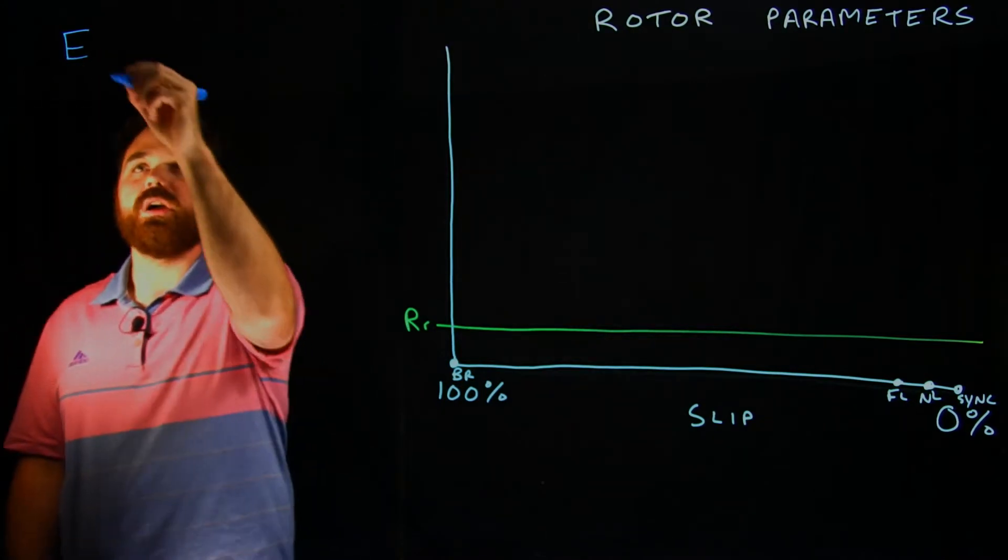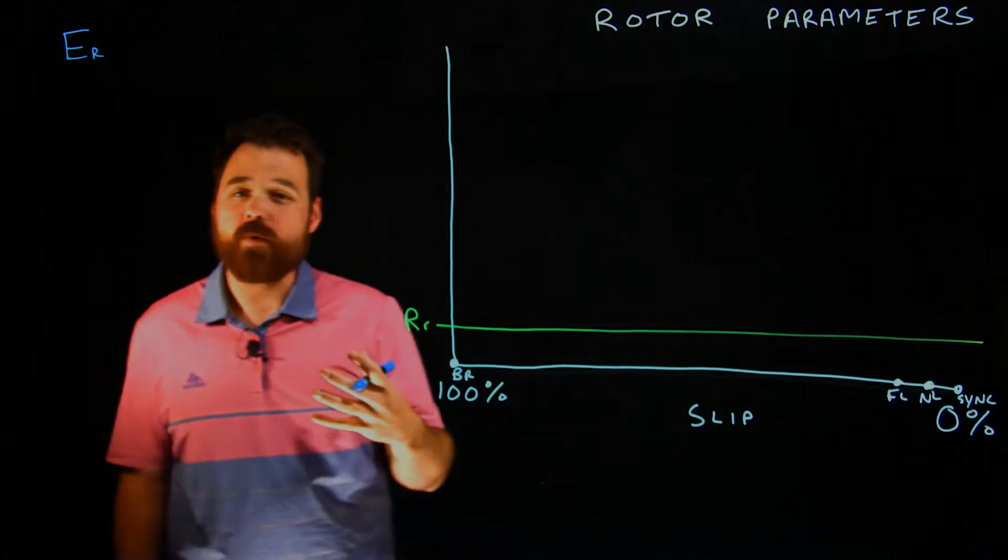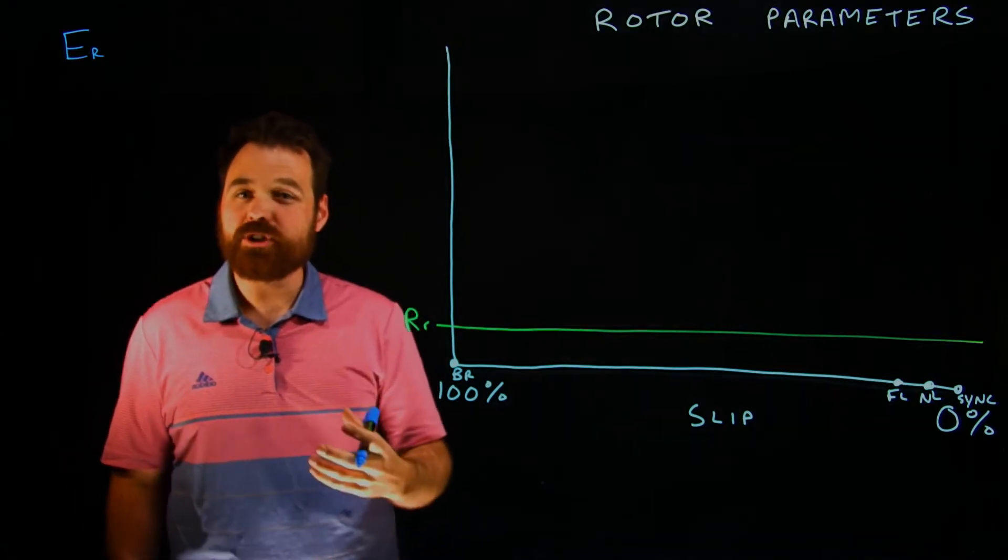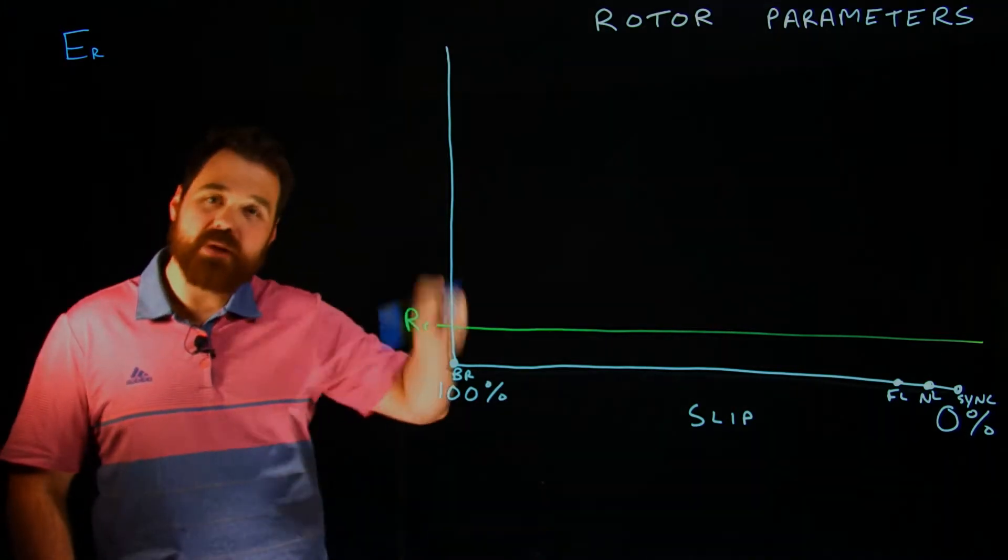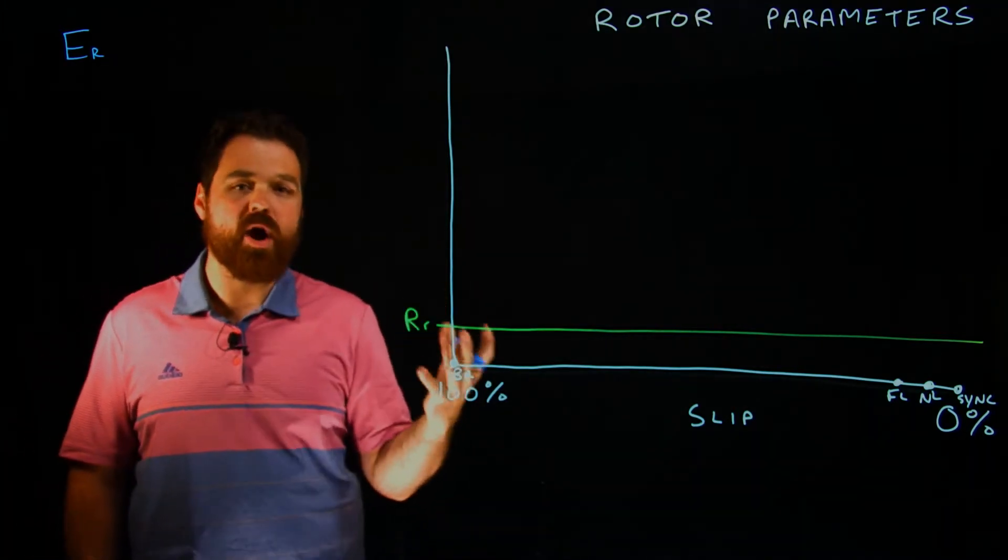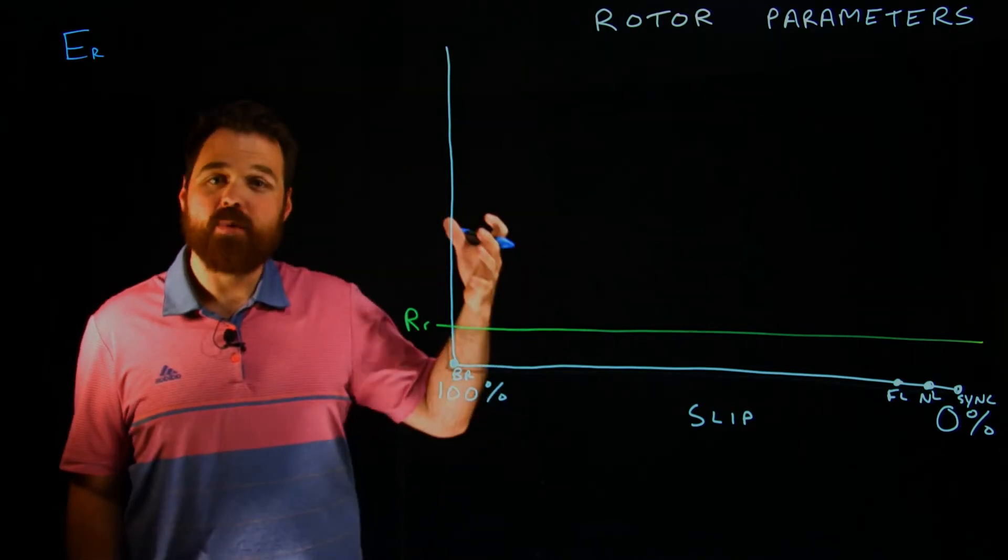So we're going to induce a voltage into the rotor. Now that voltage is going to be based on relative motion between a conductor and a magnetic field. So the magnetic field is our spinning rotor field. So if we think about how induction works, more relative motion, I'm going to get more induced voltage.